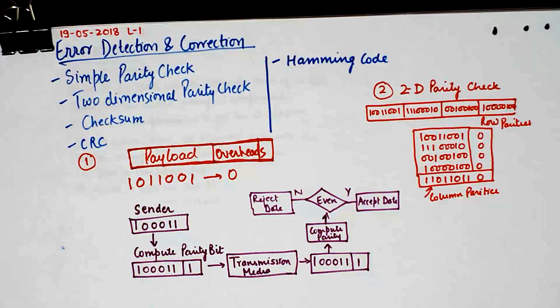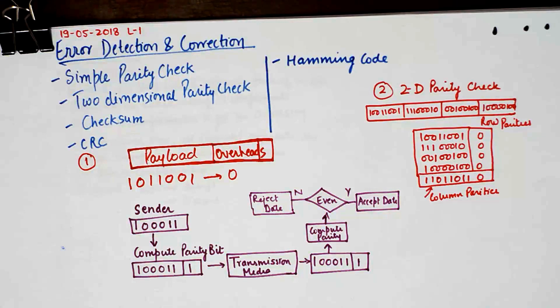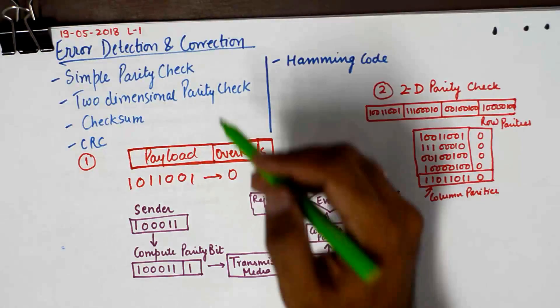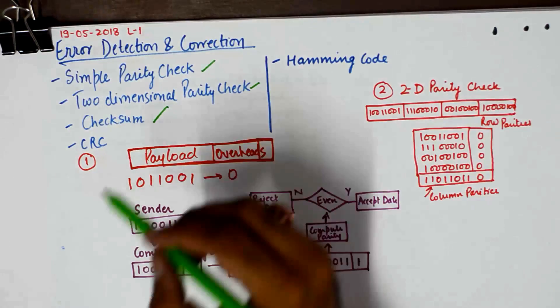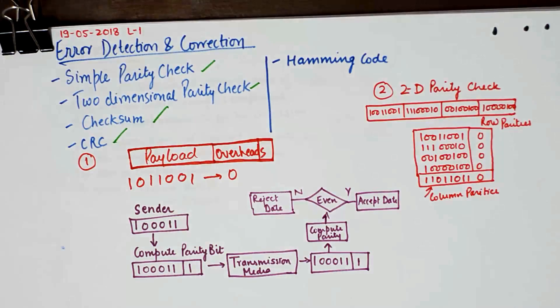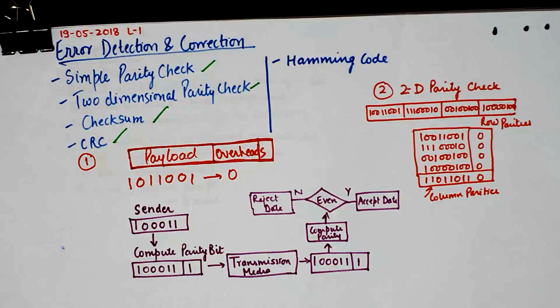Now there are some techniques which are used to detect these errors in transmission systems. Some of the techniques are only error detection techniques, while the rest of the techniques are error detection as well as correction techniques. There are a few error detection techniques that are mentioned here: simple parity check, two-dimensional parity check, checksum, and cyclic redundancy check.